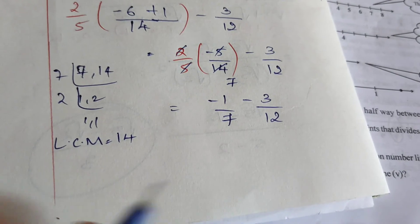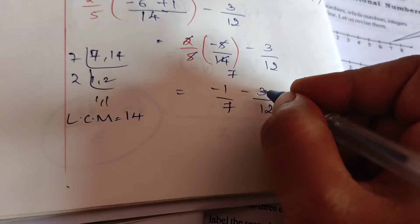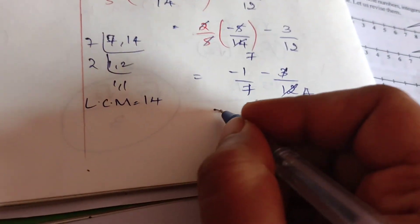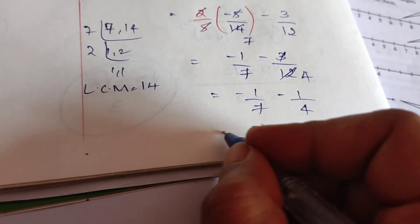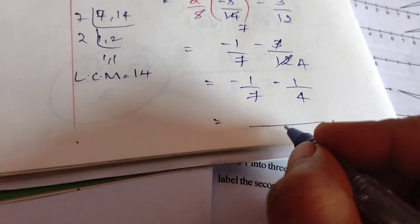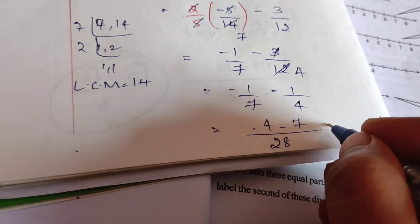Again it is a fraction with different denominators. Now here we can cancel 3 and 12: 3 × 1 = 3, 3 × 4 = 12. So we get -1/7 - 1/4. Since denominators are different, LCM will be 7 × 4 = 28, so it's going to be -4 - 7.